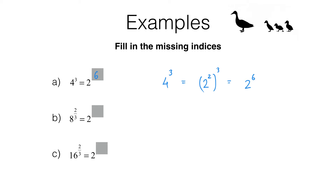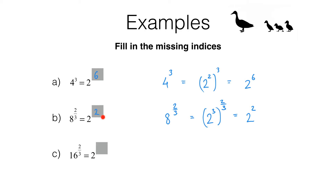Let's have a look at question b. We've got 8 to the power of 2 thirds and we need to write that in the form 2 to the power of something. So 8 to the power of 2 thirds is going to be 2 cubed to the power of 2 thirds. All I've done here is rewrite the 8 as 2 to the power of 3. We can then write this as 2 to the power of 3 multiplied by 2 thirds, which is 2. So 8 to the power of 2 thirds is simply 2 to the power of 2.